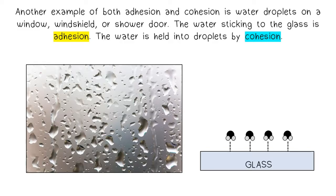Another example of both adhesion and cohesion is water droplets on a window, windshield, or shower door. The water sticking to the glass is adhesion. The water is held into droplets by cohesion.